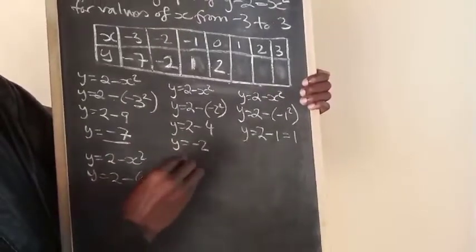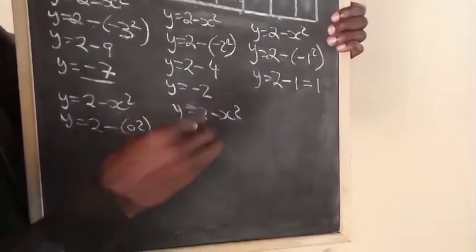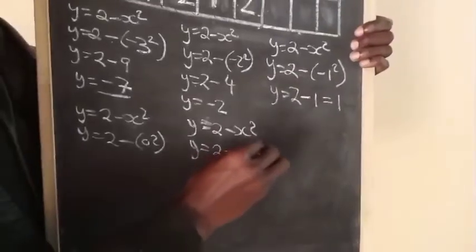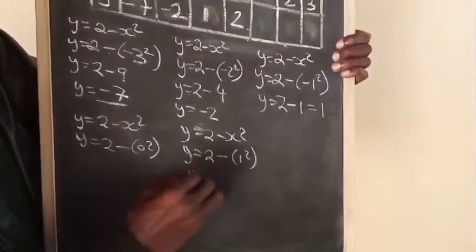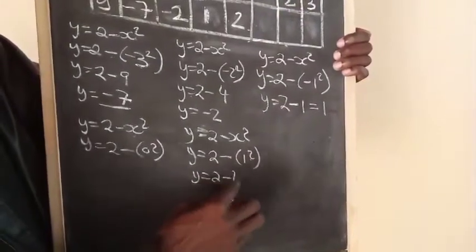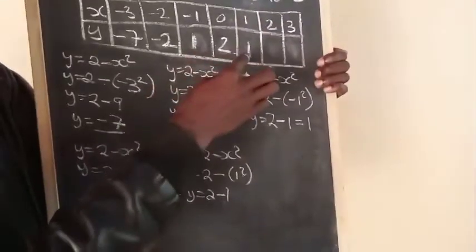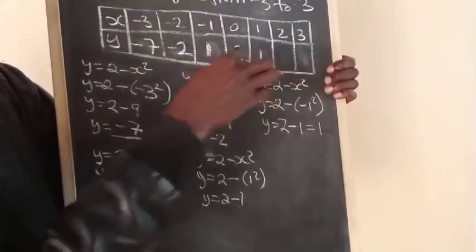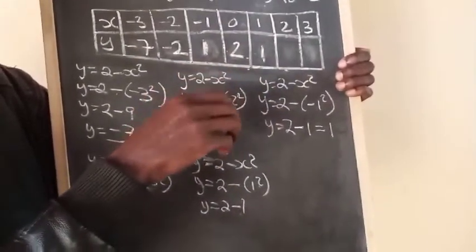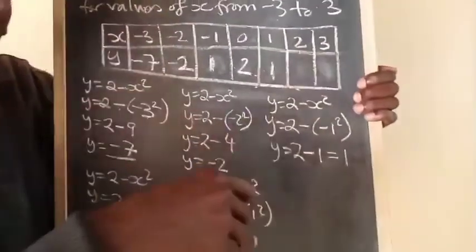Next one: y equals 2 minus x squared. Y equals 2 minus 1 squared, which is 1. So 2 minus 1 equals 1. You can see the pattern is starting to repeat - we're getting symmetry.